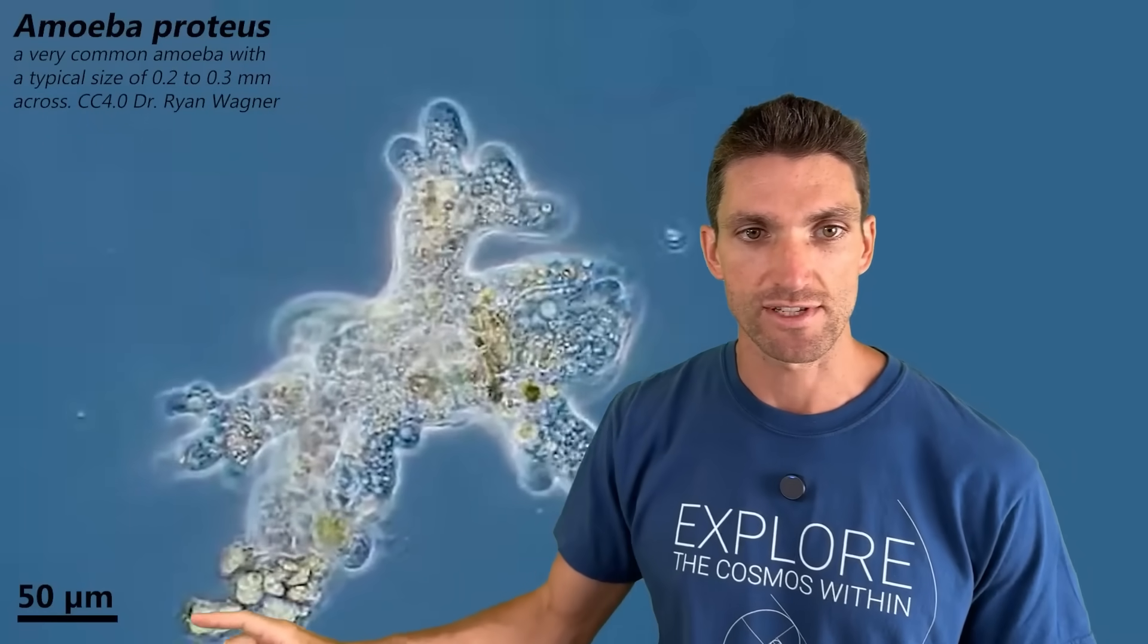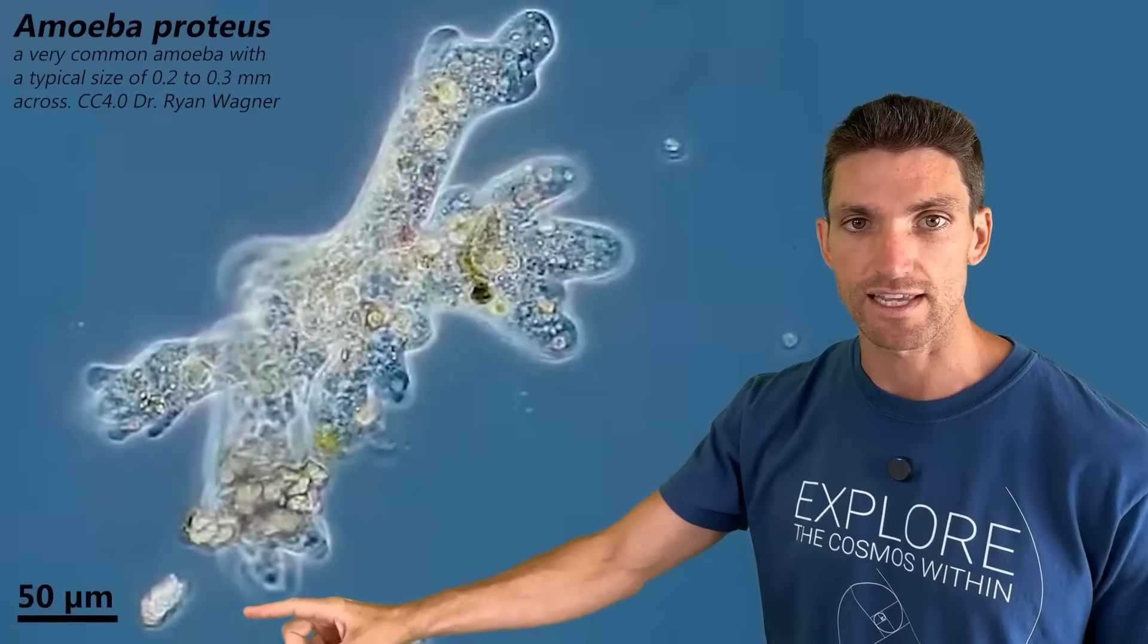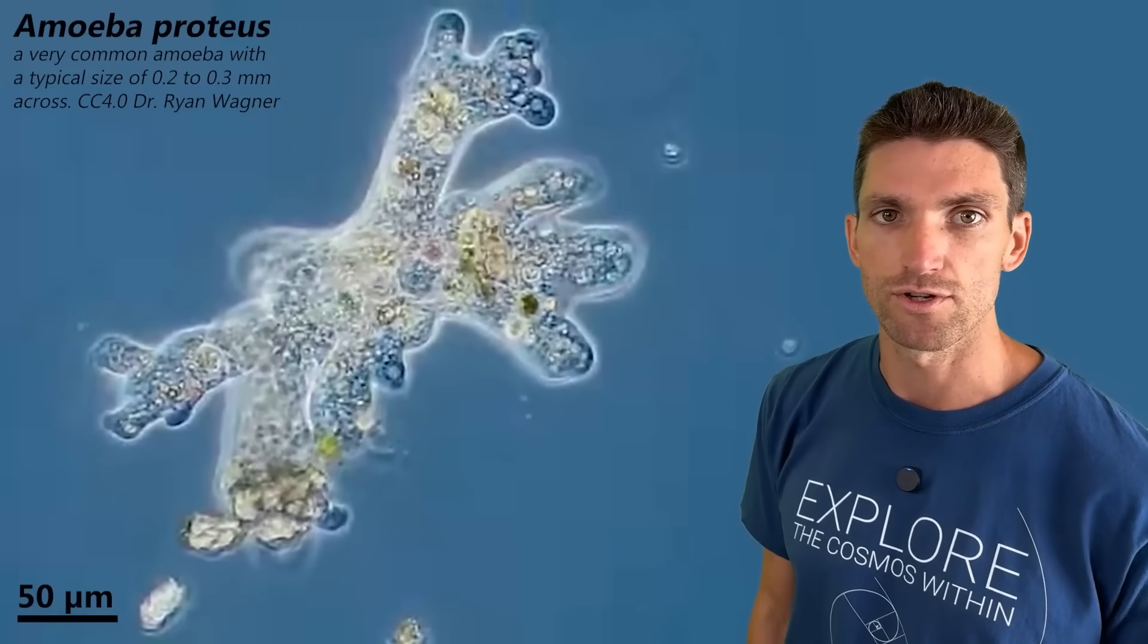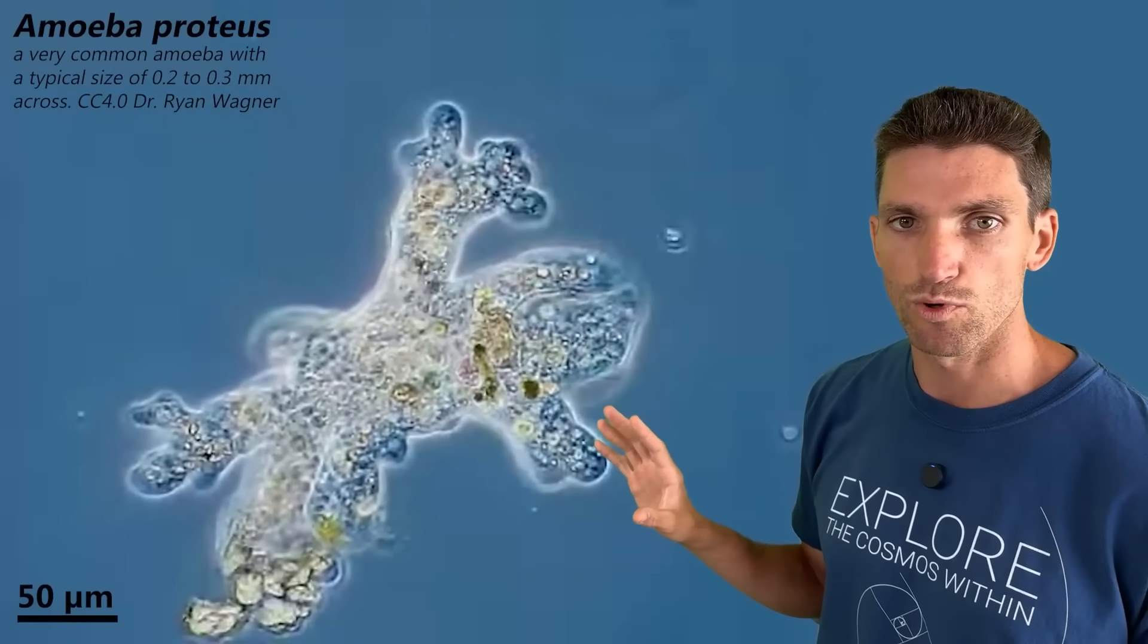You'll notice all these different organelles and structures within this amoeba. But remember, this is one single cell. I did speed this up a little bit. Here's our scale bar, this is 50 micrometers. Very tiny for the scale bar. But overall, about 0.2, 0.3 millimeters across.